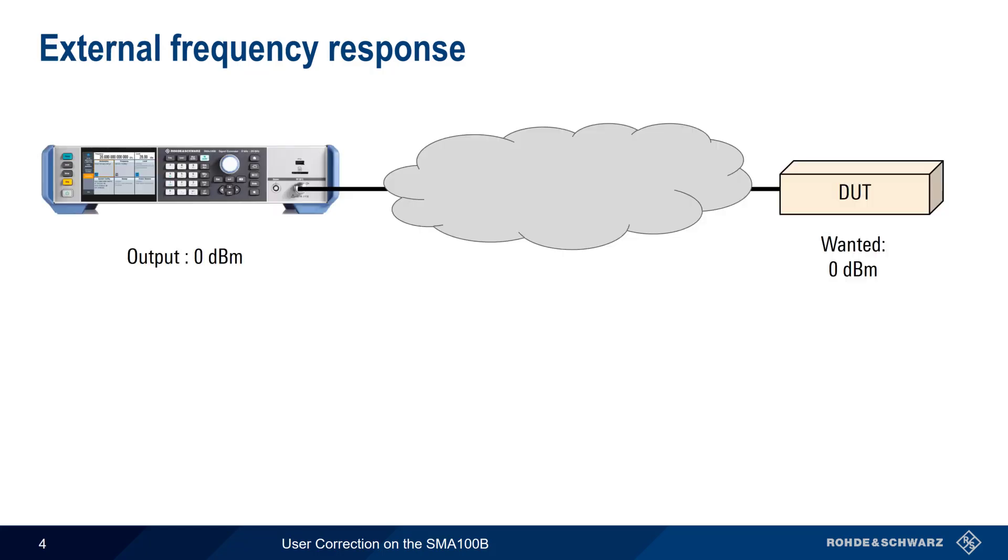Often we want to deliver a given level of signal power to a device under test, and do this over a certain frequency range. For situations where there is a relatively flat frequency response along the signal path, we can simply increase the generator output power by a fixed amount to compensate for this frequency-dependent loss. But what if we have a significant frequency response?